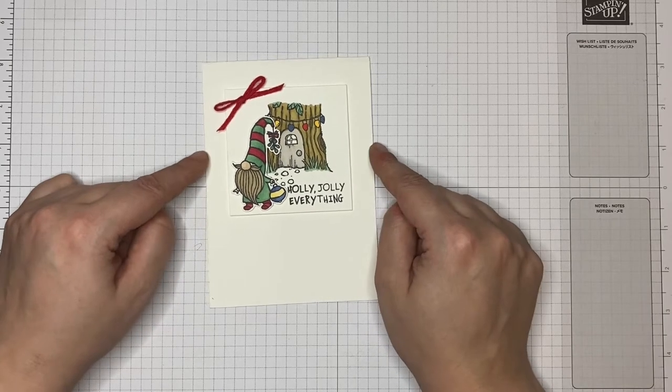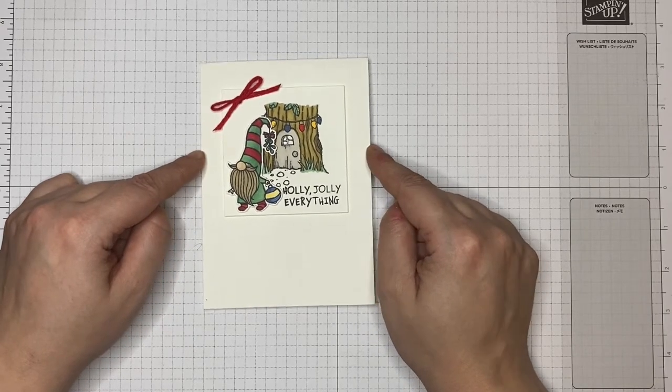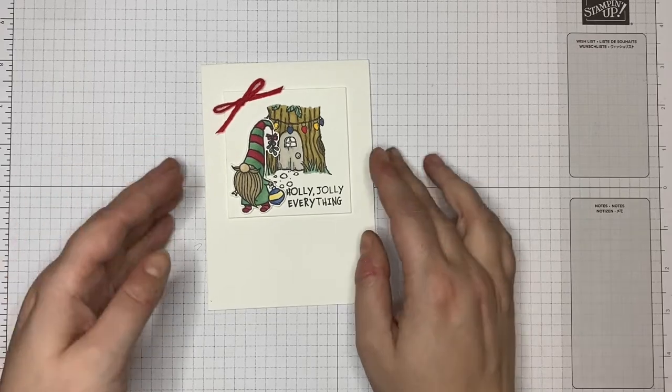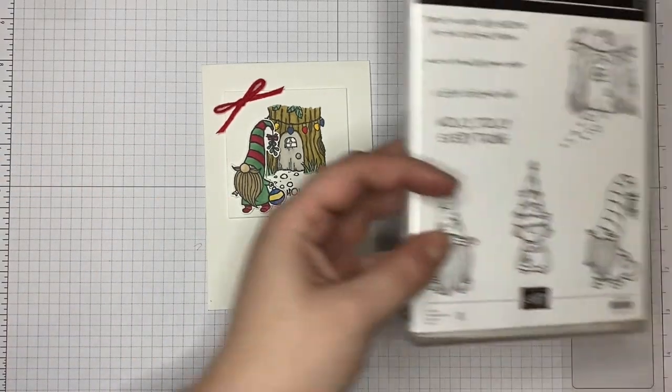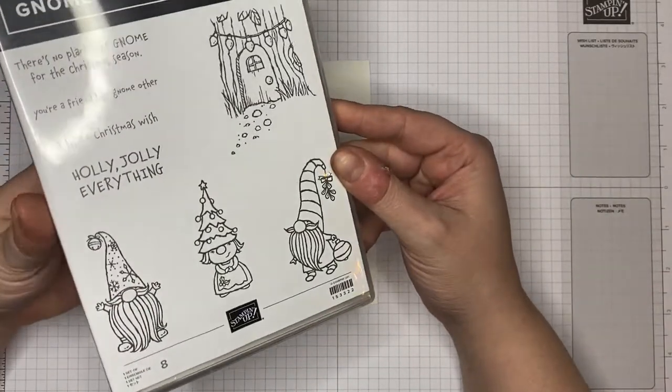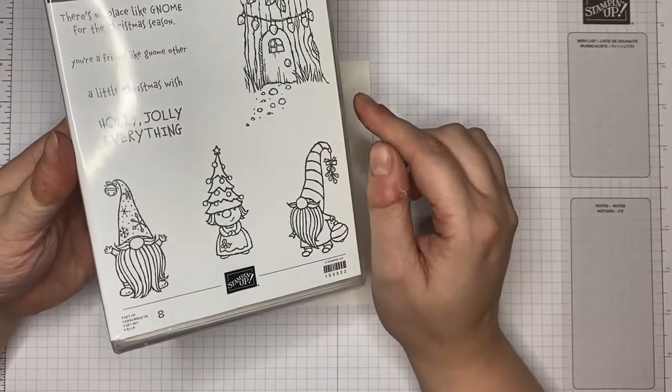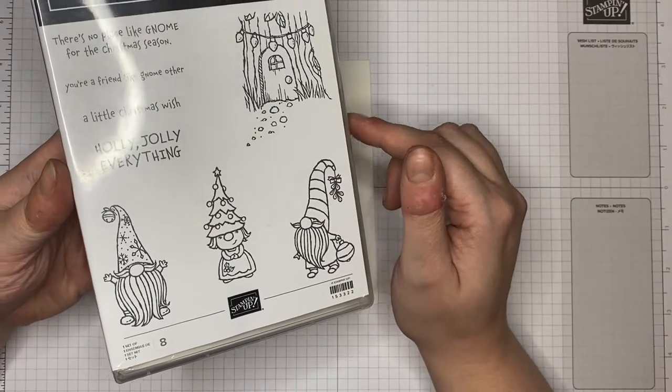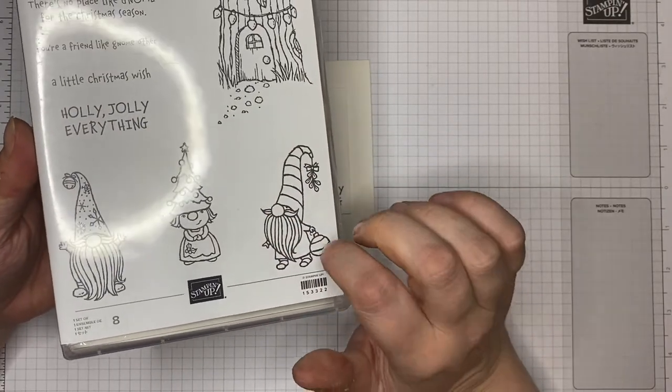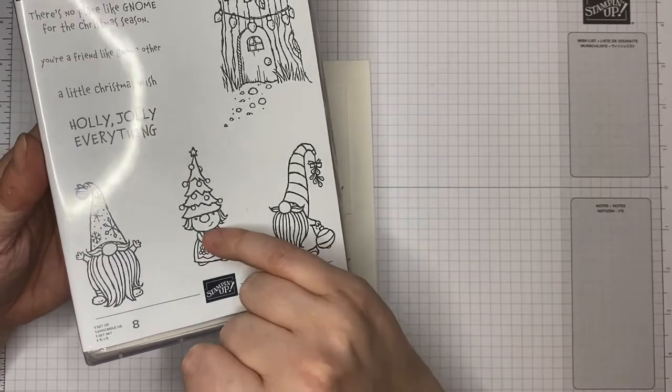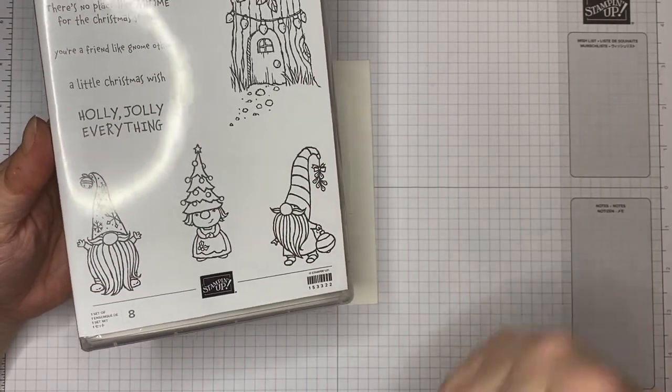As you can see here, today's stamp set is a Christmas one. So this card here was made using GNOME for the holidays. As you can see, this stamp set is gorgeous. It has 8 pieces and it's a cling stamp set but it's a good line stamp set.